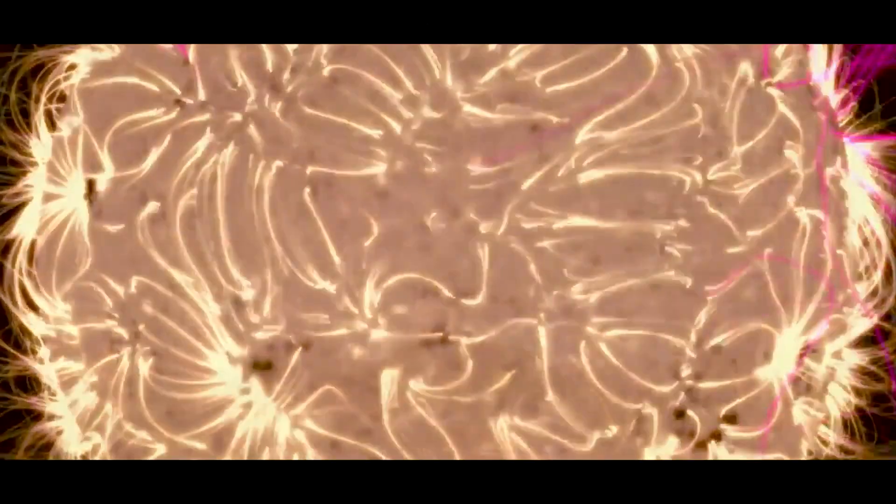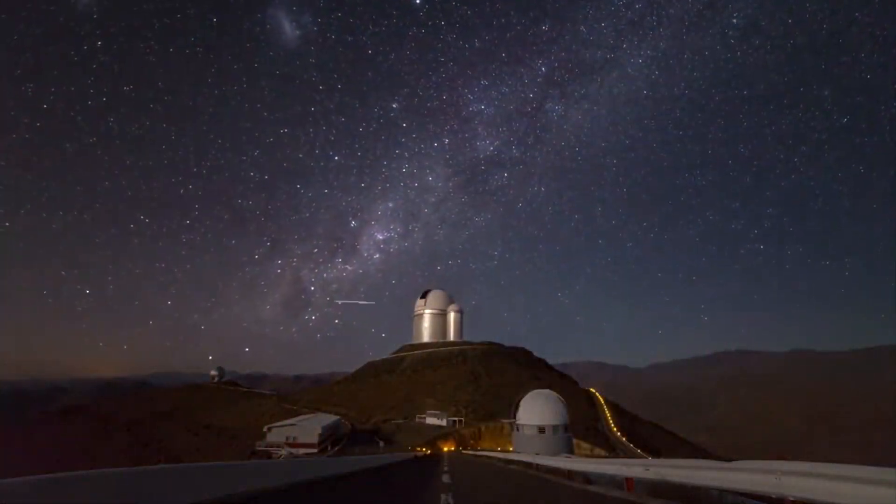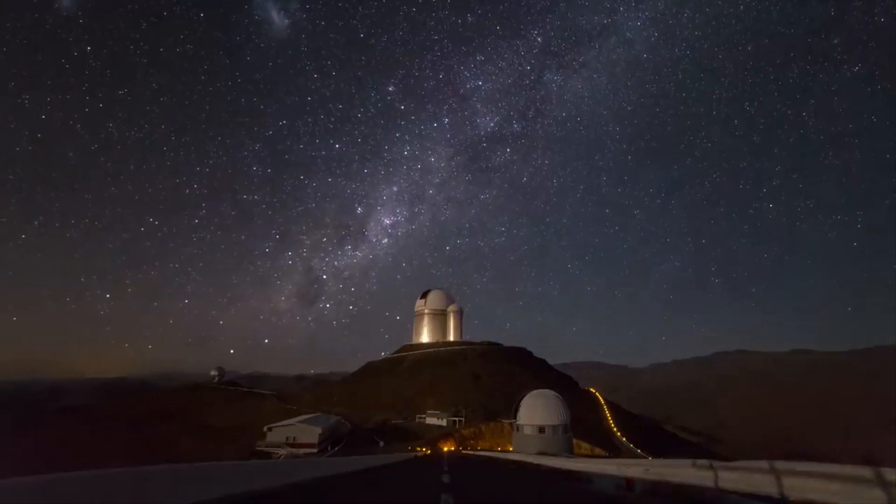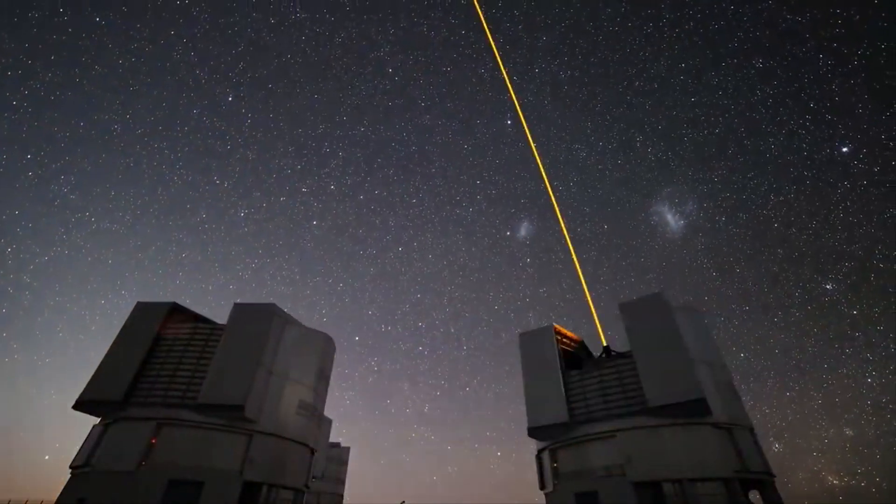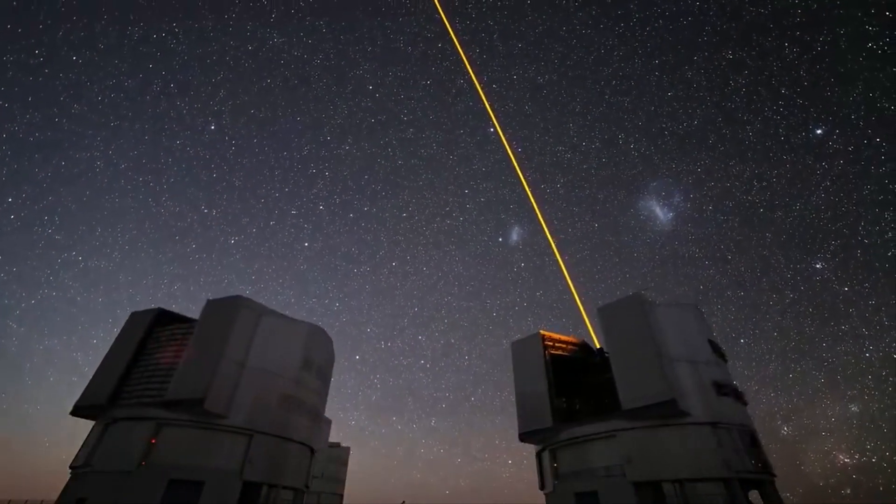Sooner or later, these photons fly out of the sun and go on a long journey through space, and some of them come to Earth, giving us light and warmth.